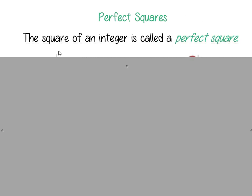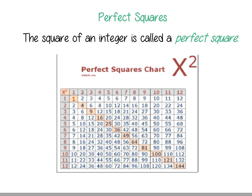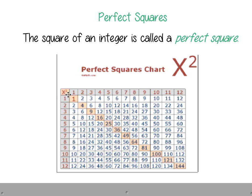Next, we need to talk about what a perfect square is. A perfect square is an integer — it's the square of an integer. Here is a chart of all the different perfect squares. For example, the square root of 4 is a perfect square because 2 times 2 equals 4, so the square root of 4 equals 2.